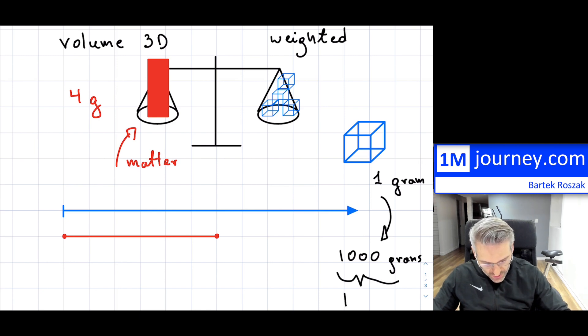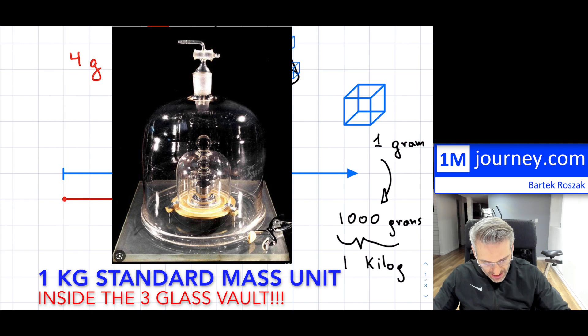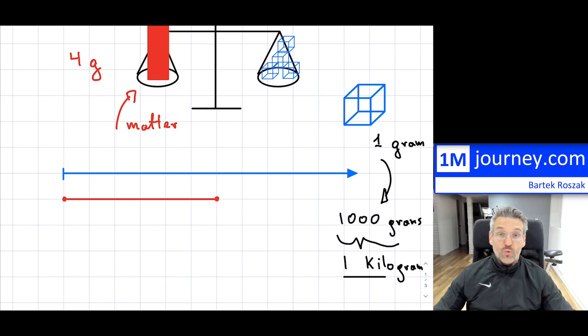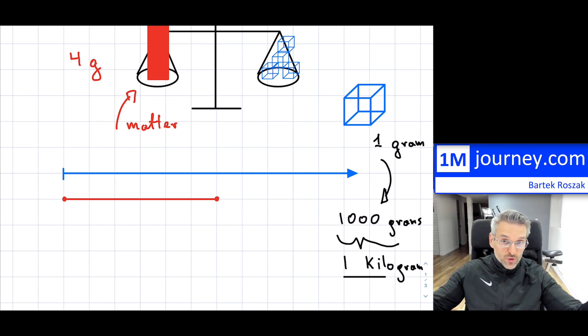because gram is actually rather tiny within here, so they took 1,000 of these little grams that they had, and they called it actually one, so the thousand stood for kilo, so they called it a kilogram, and that particular kilogram became our standard in physics,